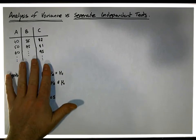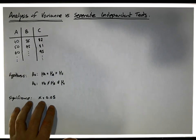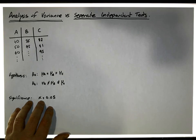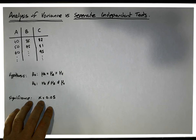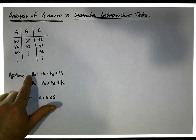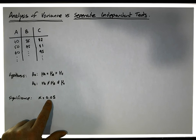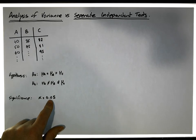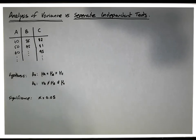When we undertake an analysis of variance, we're confident that we're controlling for the type one error rate — the probability of incorrectly rejecting the null hypothesis when it is actually true. If we do reject, the significance level means we're willing to accept being wrong in that rejection five percent of the time. The probability of committing a type one error is fixed for analysis of variance.